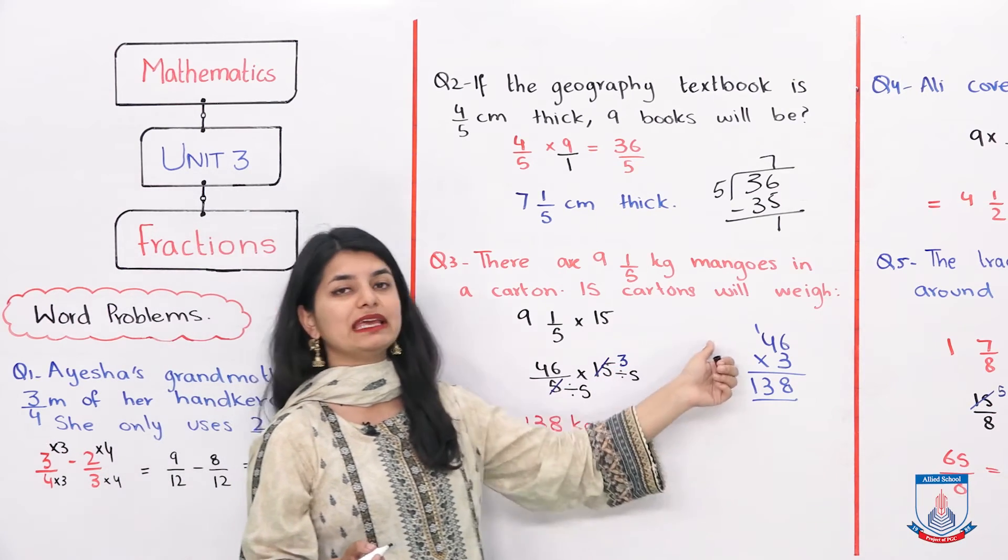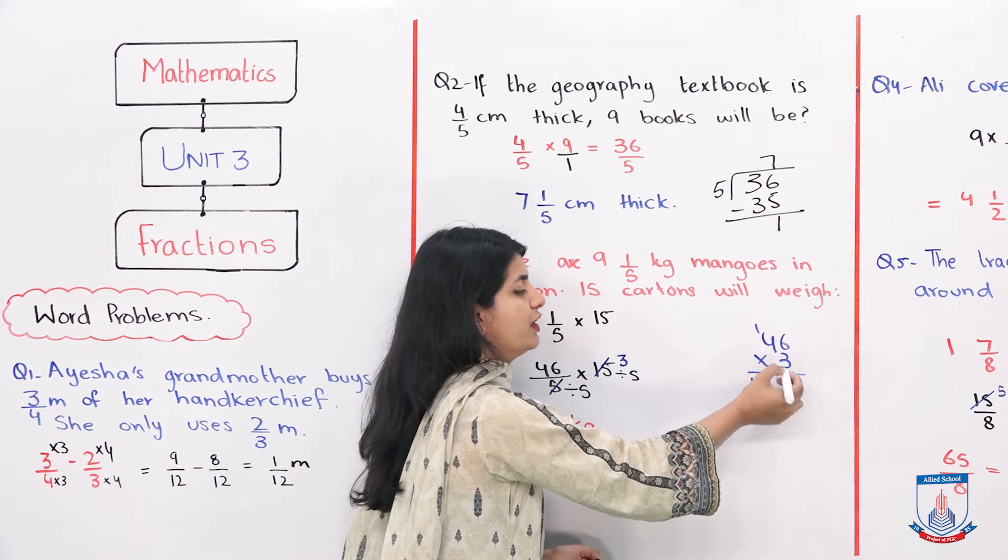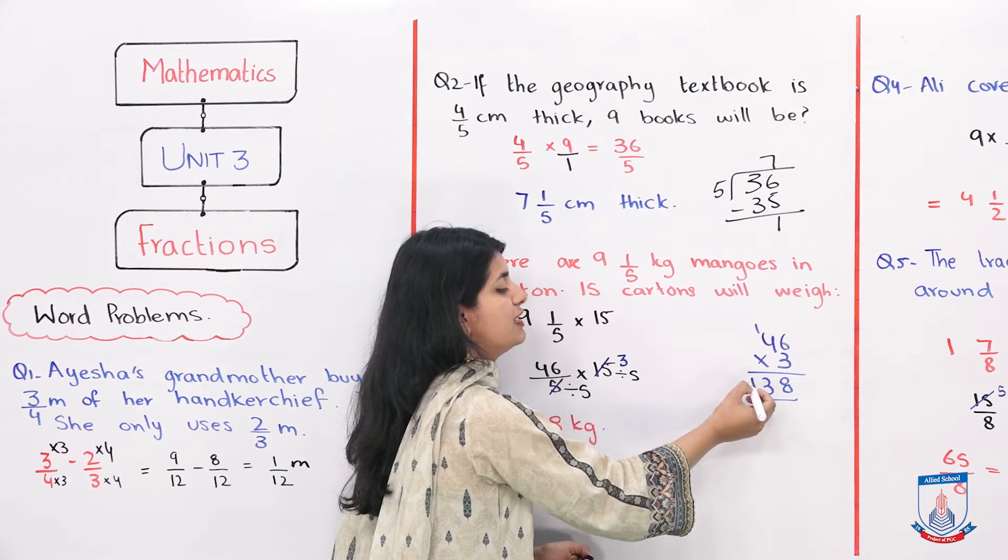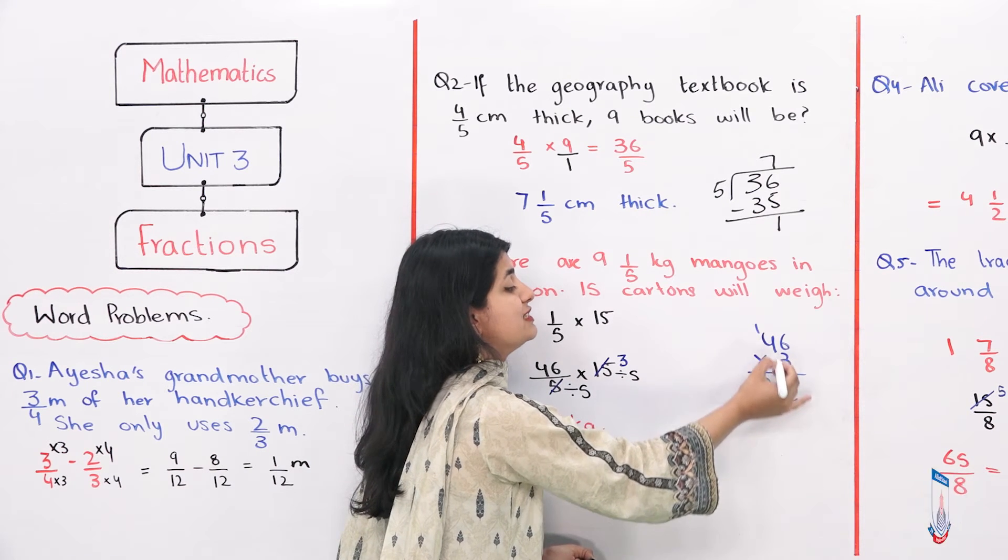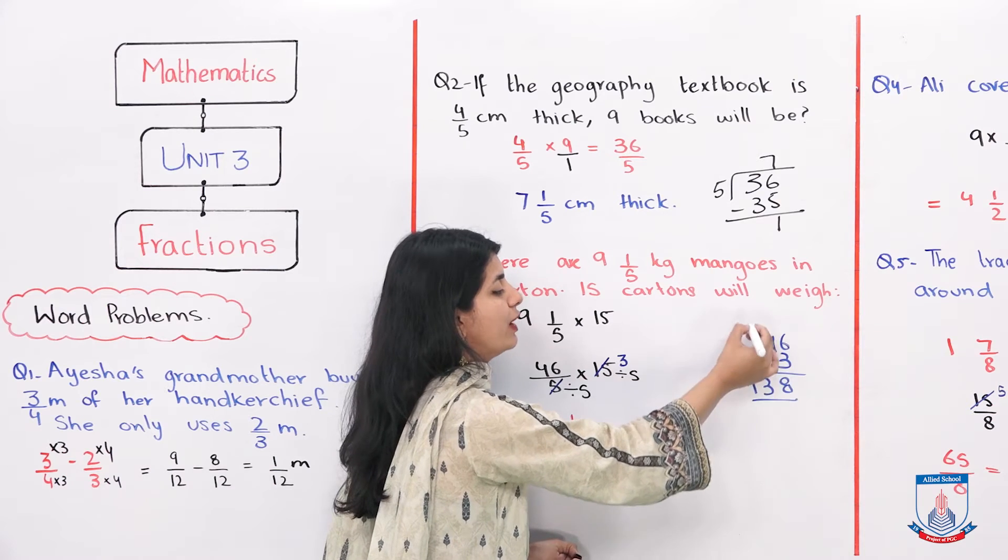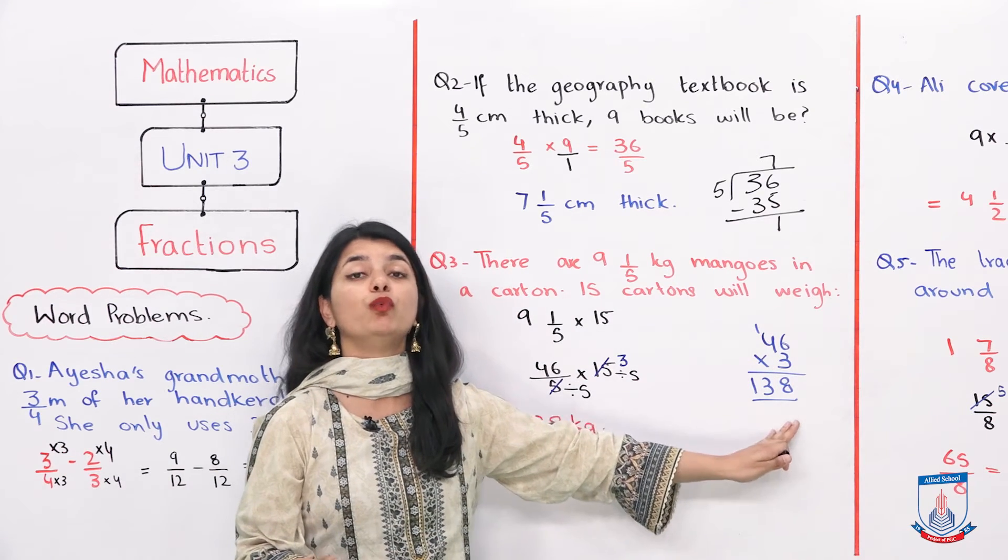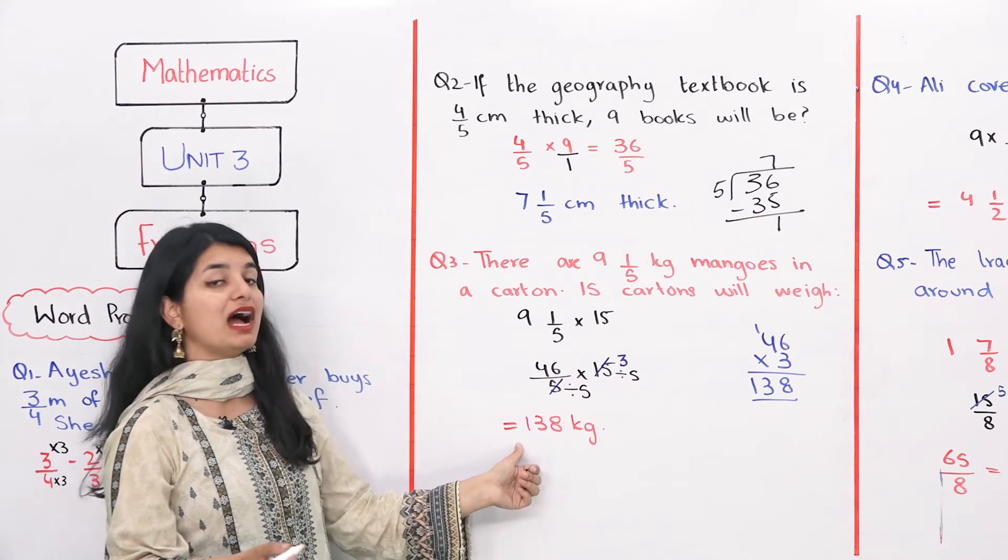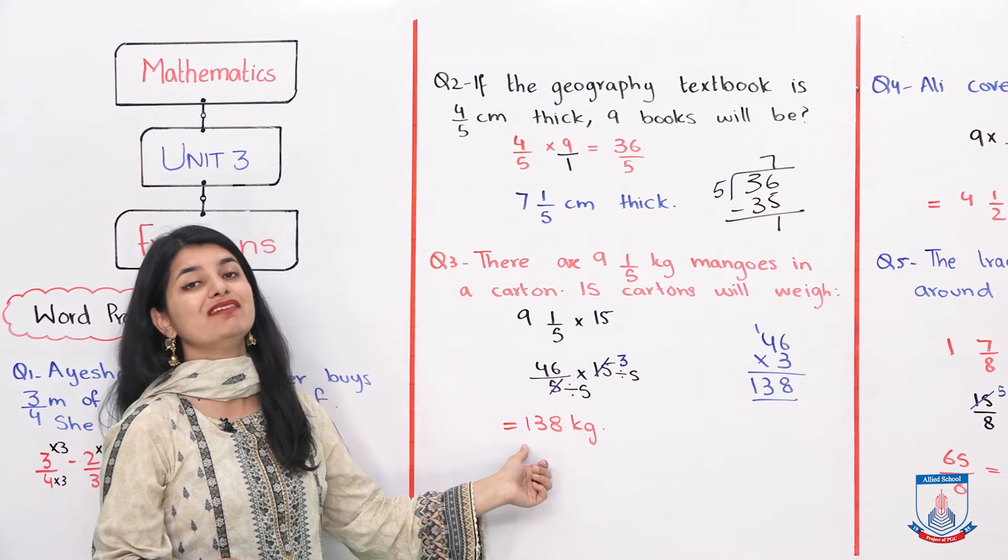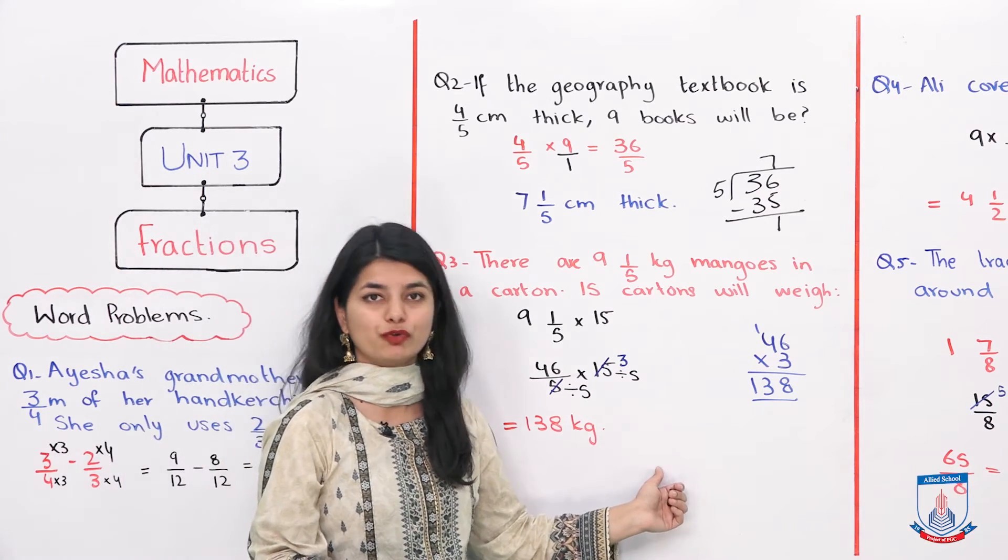46 into 3 is? 3 sixes are 18. 3 fours are 12, plus 1 is 13. So we get 138. Your answer is that 15 cartons will weigh 138 kilograms.